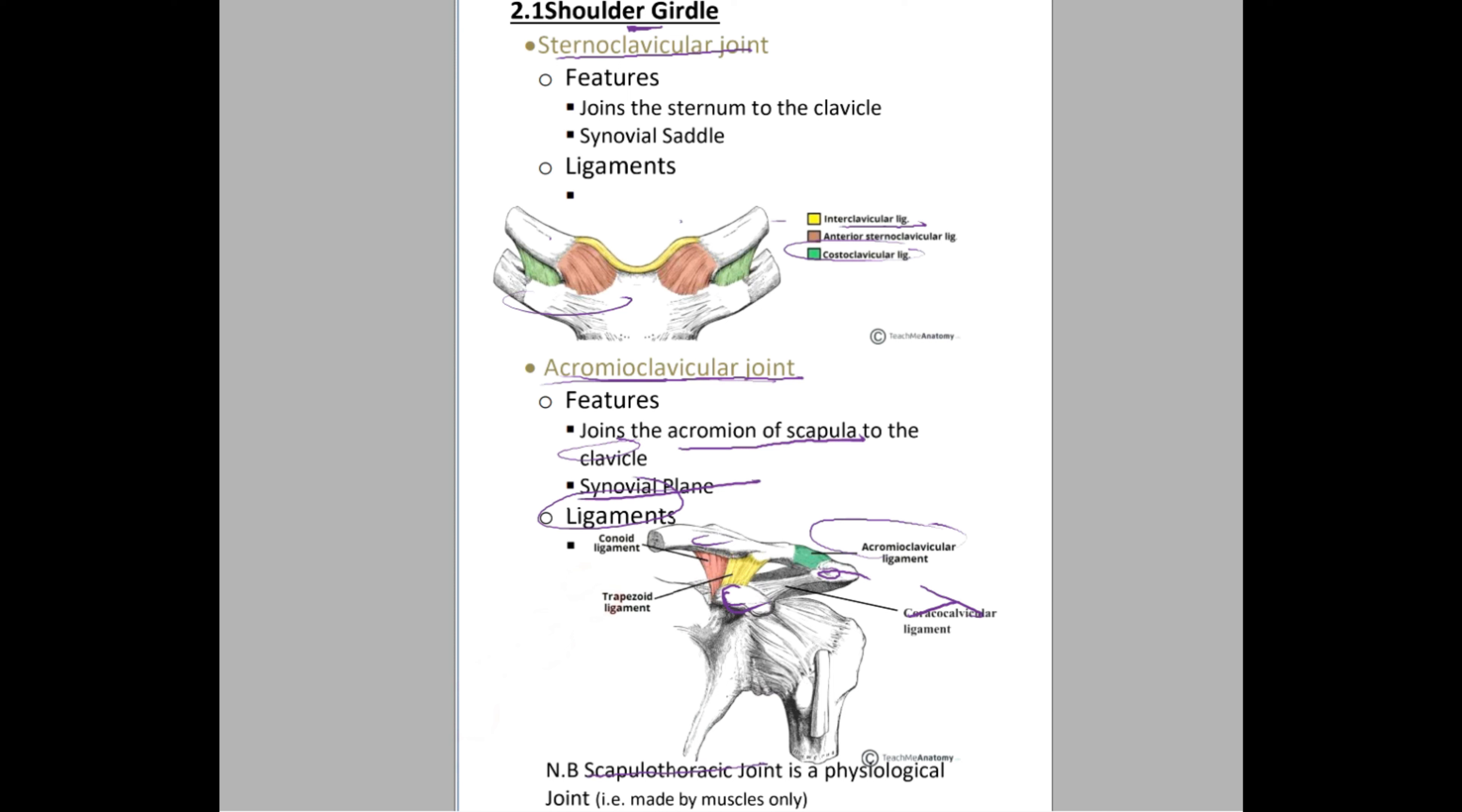المفصل الاسكابيولو ثوراسيك، المفصل غير حقيقي مصنع بالعضلات، ليس بين عظمتين ولكن بين عضلات وعظمة. هذي هي المفاصل الموجودة في الشولدر جردل.